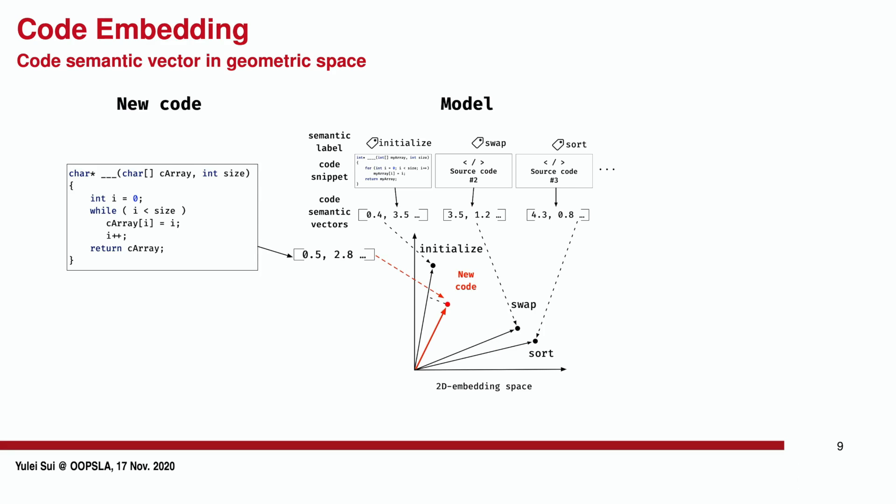For example, a new code snippet initializing an array of charts using a while loop is also tagged with the same label 'initialize'. The key of code embedding is to build a compact vector representation that can precisely capture code semantic.